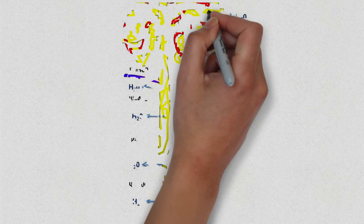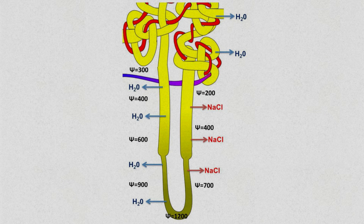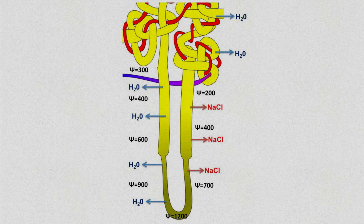At the proximal convoluted tubule the water potential in the nephron is higher. The water potential in the interstitial region is lower due to the ascending loop pumping out the sodium ions. This leads to water leaving the proximal convoluted tubule and the descending loop by osmosis. This reduces the water potential in the nephron until it reaches the loop of Henle.